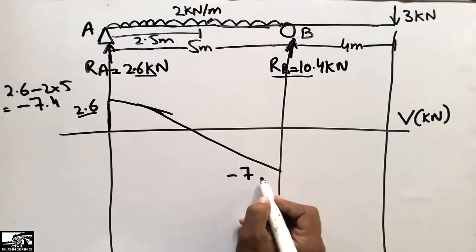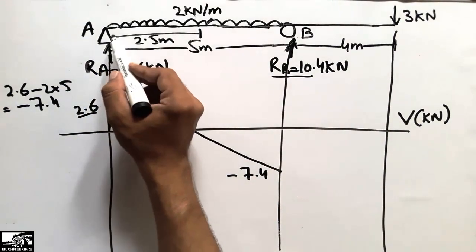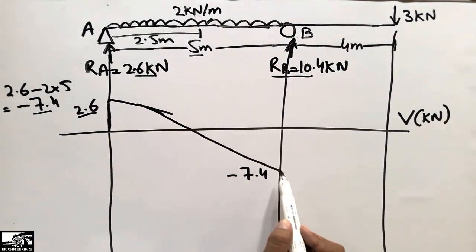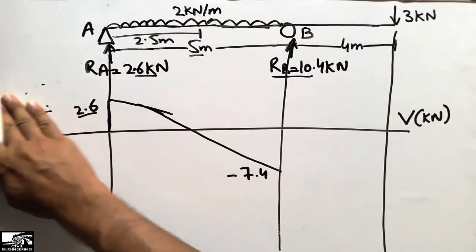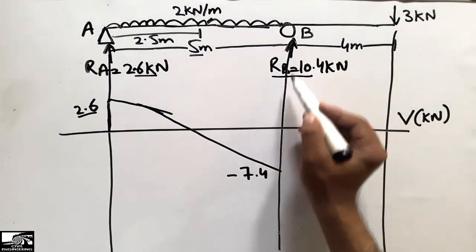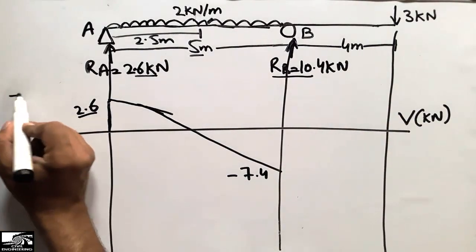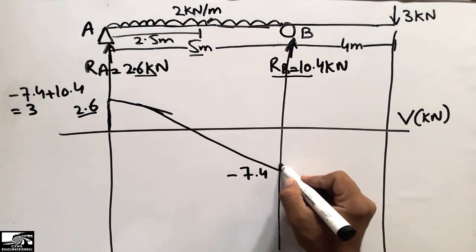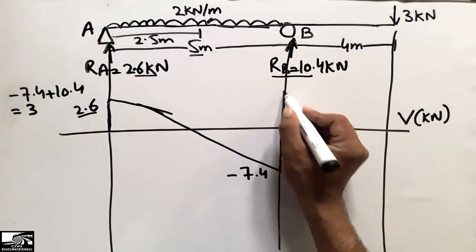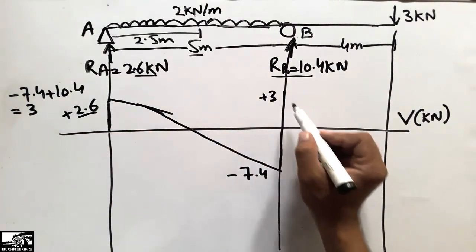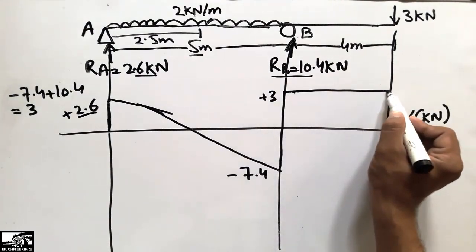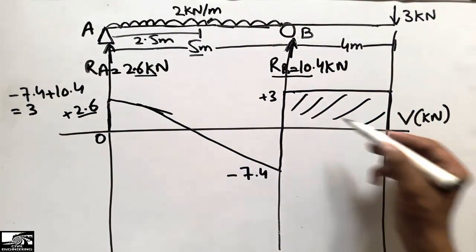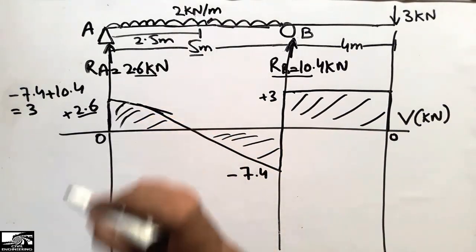At point B, the reaction RB of 10.4 kilonewtons acts upward. So minus 7.4 plus 10.4 equals plus 3 kilonewtons. The shear force jumps up to plus 3. After this there is no further load, so the shear force moves straight across and then drops to zero at the end. This completes the shear force diagram.